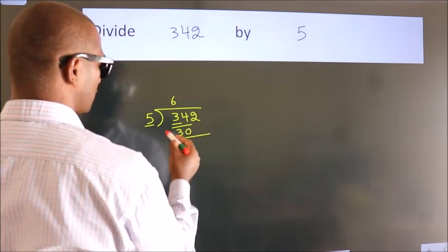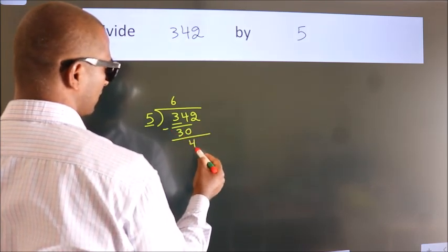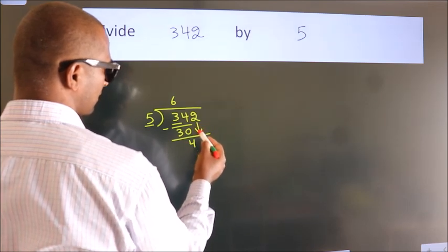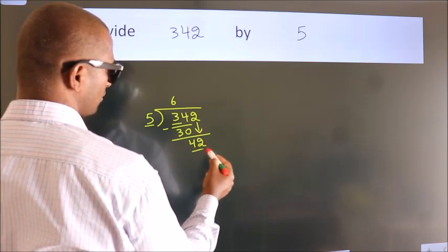Now we should subtract. We get 4. After this, bring down the beside number. So 2 down. So 42.